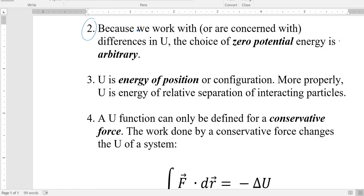Potential energy is energy of position or configuration. And more specifically, it's energy of separation. So the two types of potential energy that you might be familiar with from a previous course are gravitational potential energy and elastic or spring potential energy.